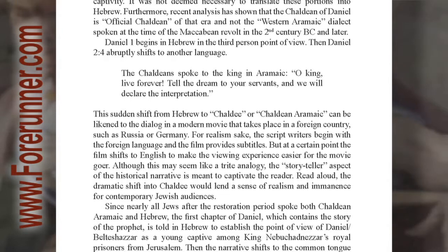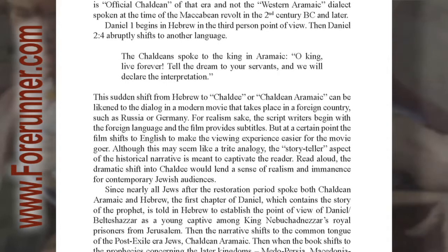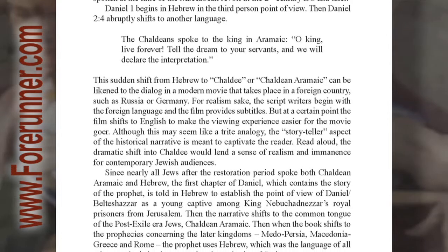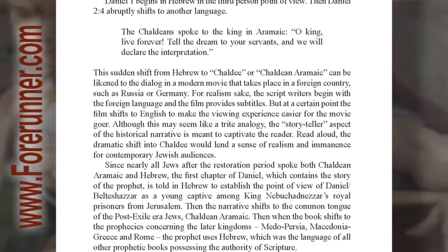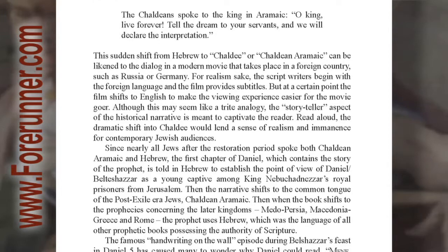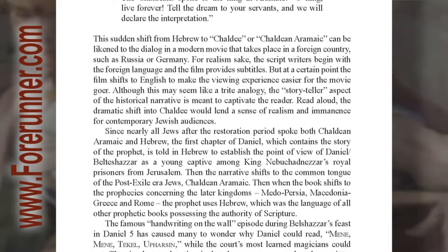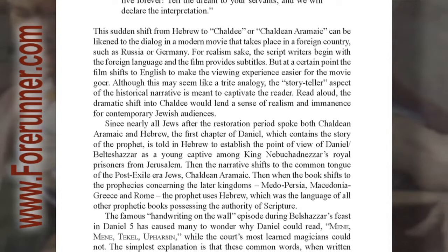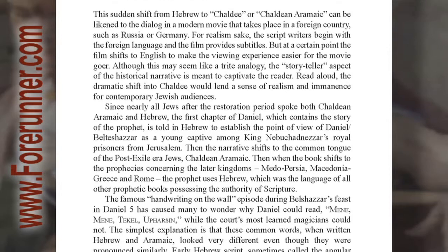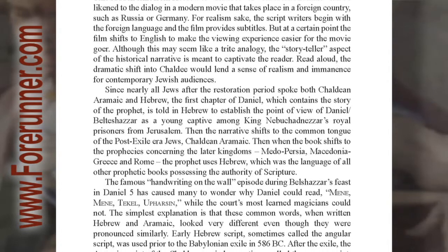Daniel 1 begins in Hebrew in the third-person point of view. Then Daniel 2:4 abruptly shifts to another language: 'The Chaldean spoke to the king in Aramaic. O king, live forever! Tell the dream to your servants, and we will declare the interpretation.' This sudden shift from Hebrew to Chaldean Aramaic can be likened to the dialogue in a modern movie that takes place in a foreign country, such as Russia or Germany. For realism's sake, the scriptwriters begin with the foreign language and the film provides subtitles, but at a certain point the film shifts to English to make the viewing experience easier for the moviegoer. Although this may seem like a trite analogy, the storyteller aspect of the historical narrative is meant to captivate the reader. Read aloud, the dramatic shift into Chaldean would lend a sense of realism and imminence for contemporary Jewish audiences.